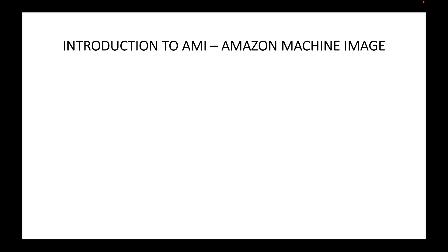In this session we will look at an introduction to AMIs. AMI stands for Amazon Machine Image, and AMIs are simply your operating system. Whenever we want to launch any virtual machine or EC2 instance, we need to specify the operating system, and that is where we use the AMI to specify what operating system we want for that particular virtual machine.